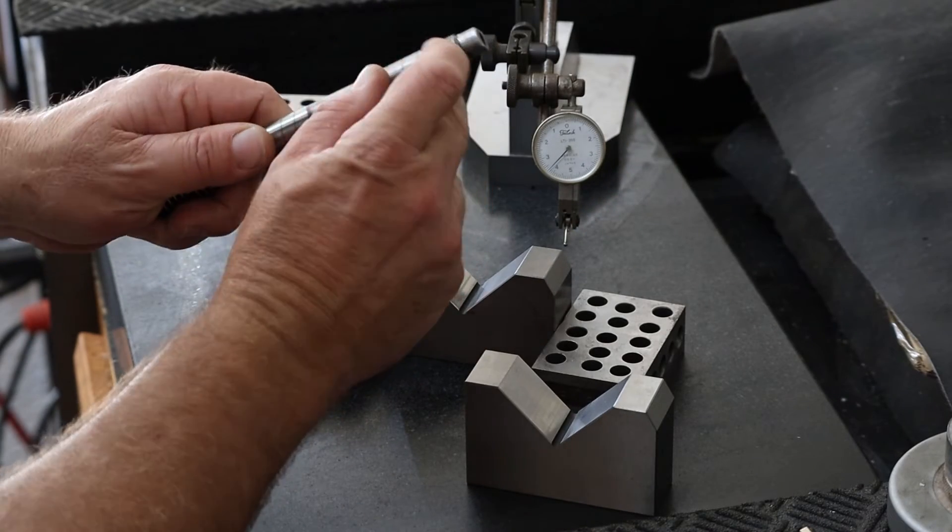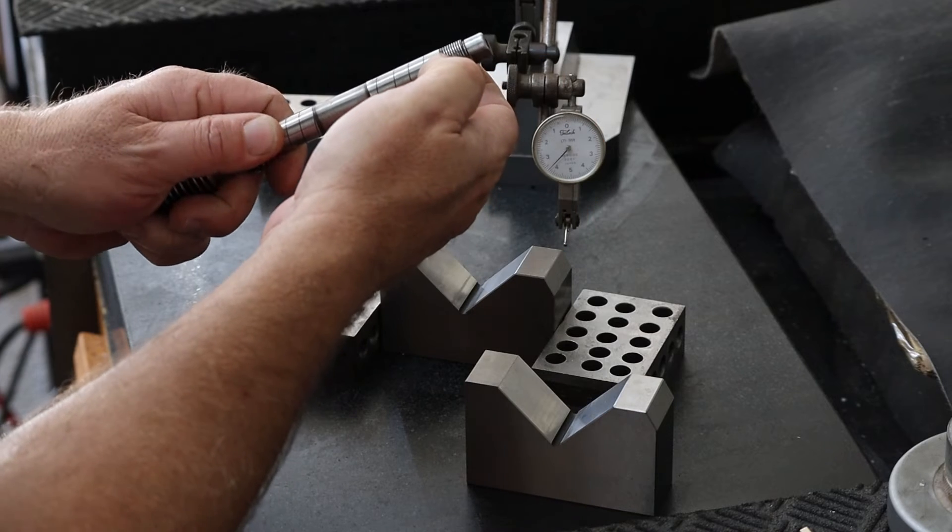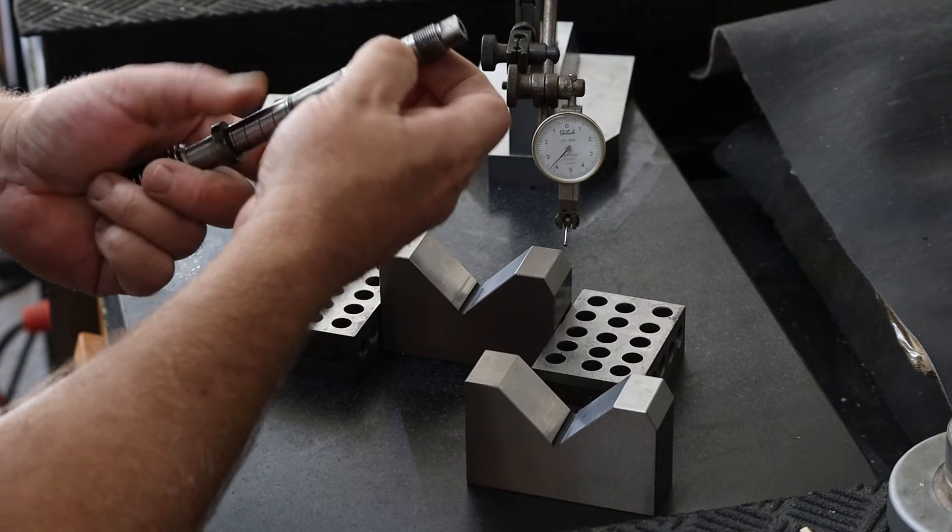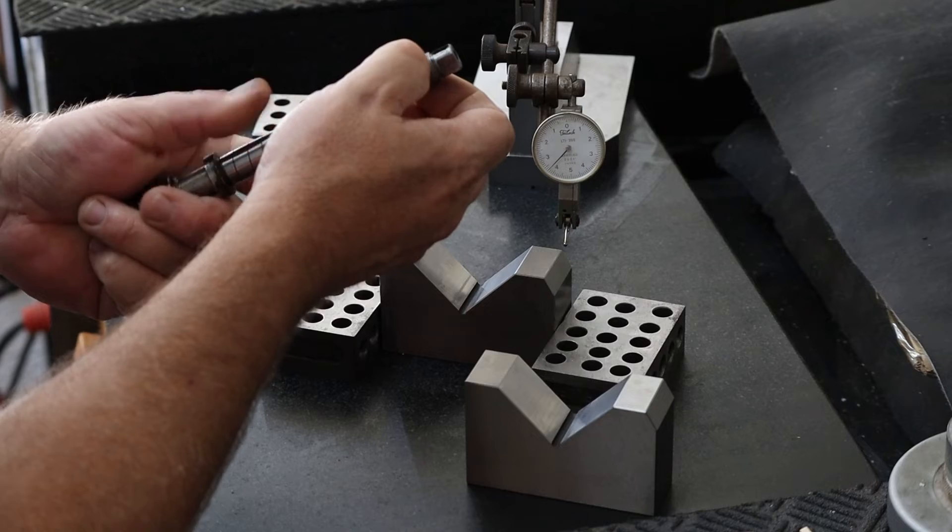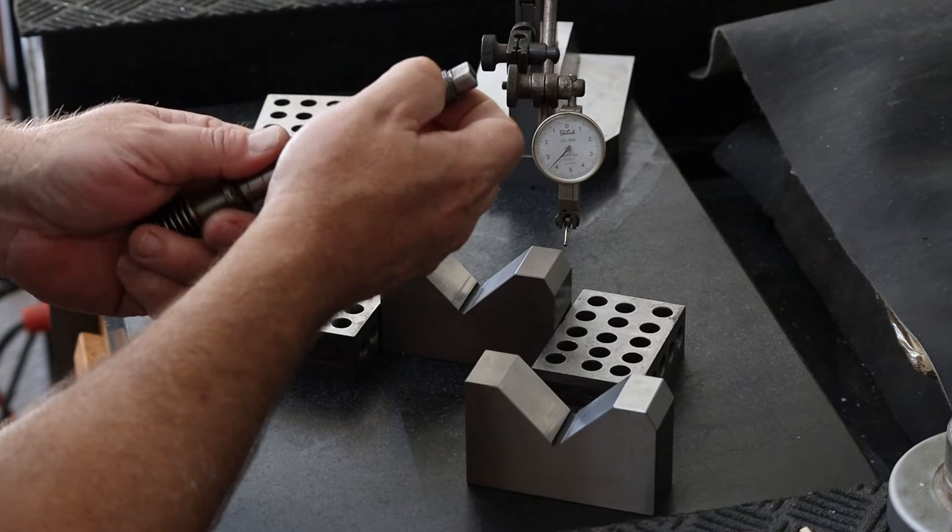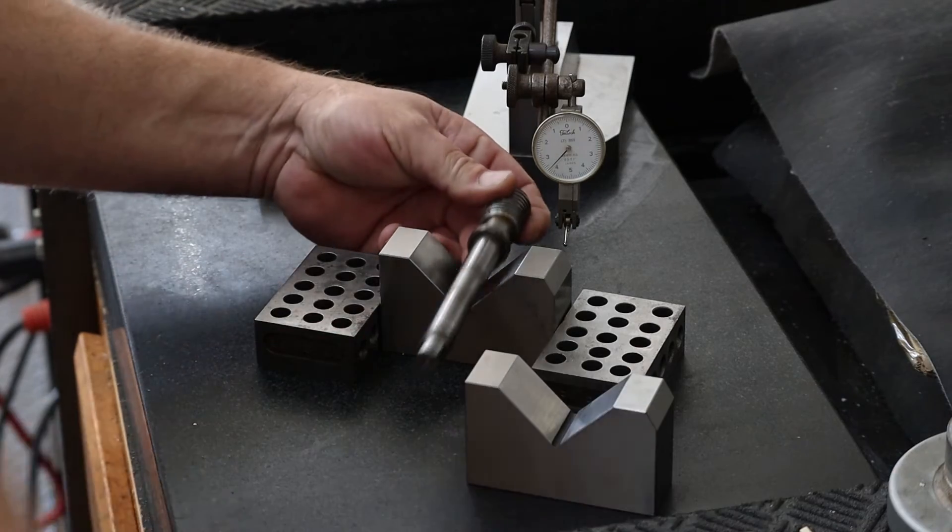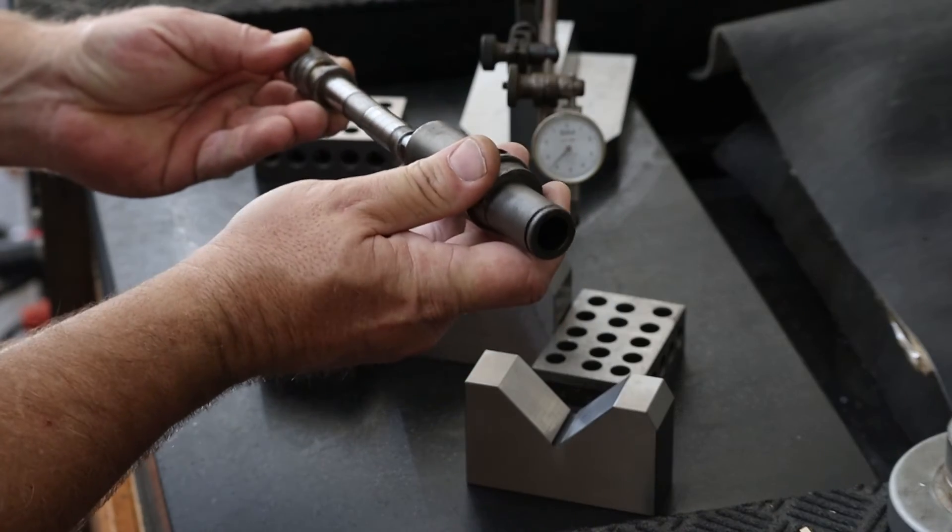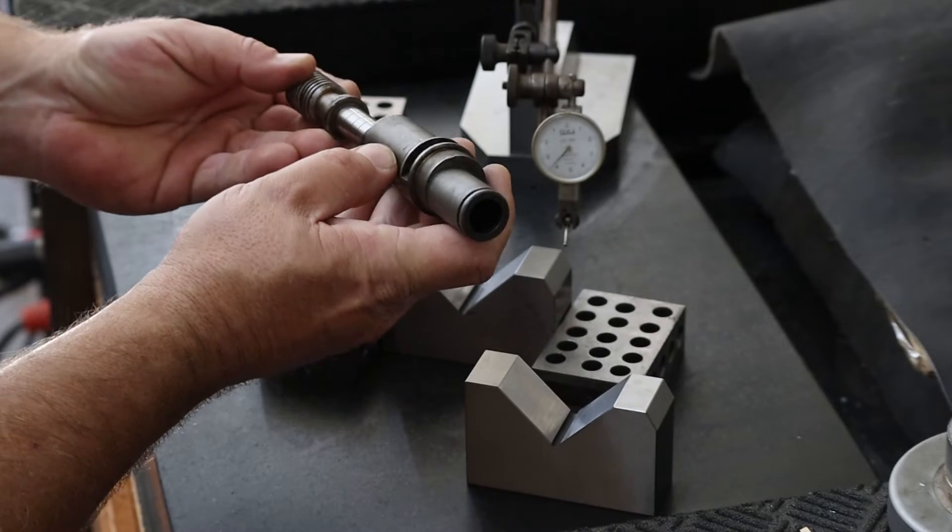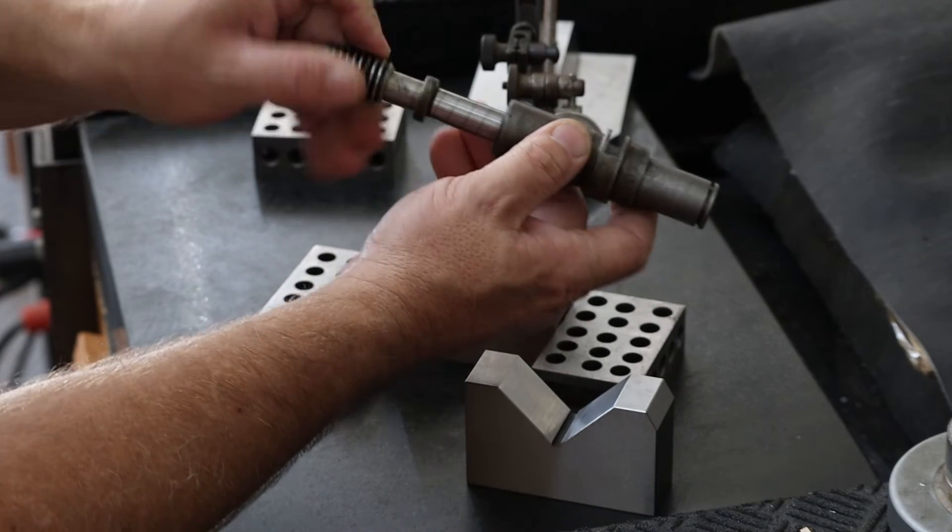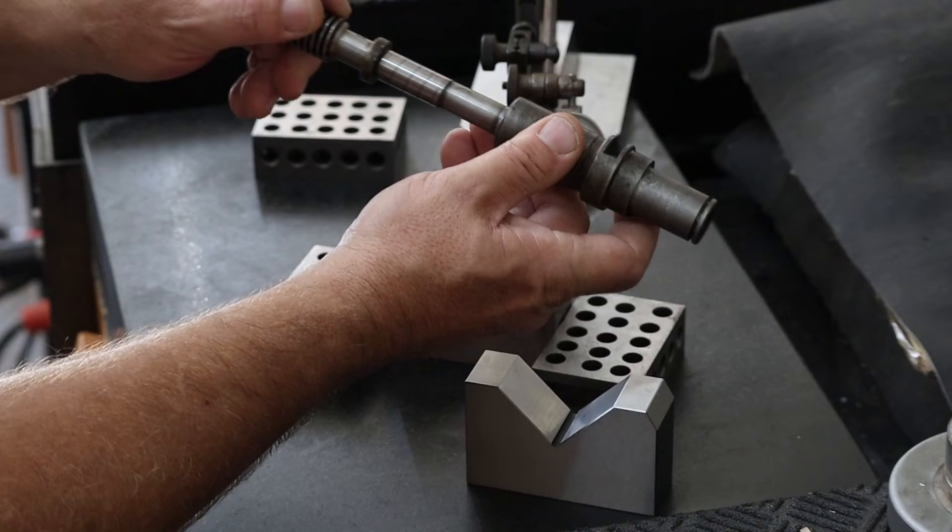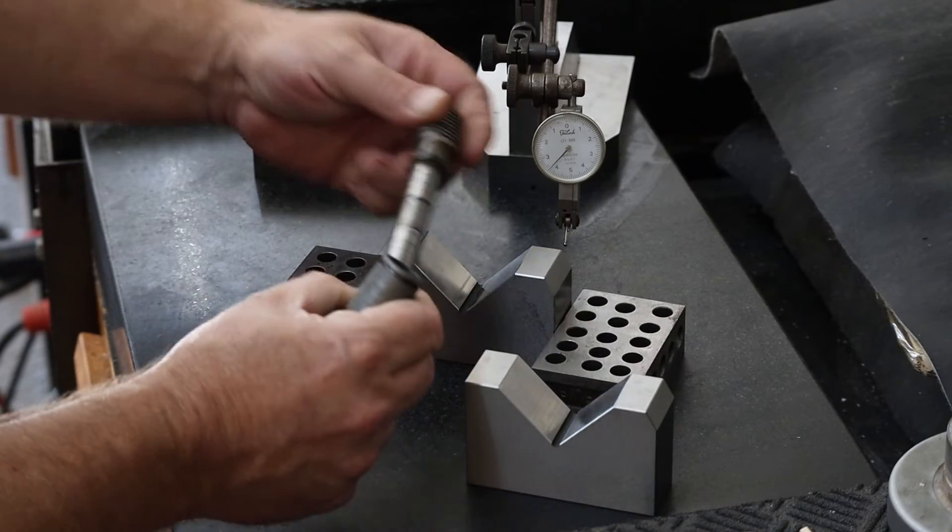There's some marring on the thread here from when one of the nut captures was tightened up on it, same with here and here. We'll get this cleaned up, straighten it up the best we can, and that explains why it doesn't fit all the way inside of there anymore—it's just that the one side is too far out.